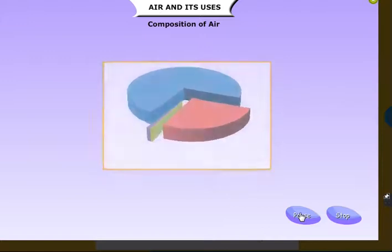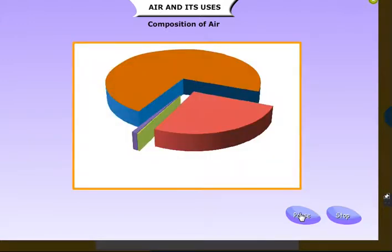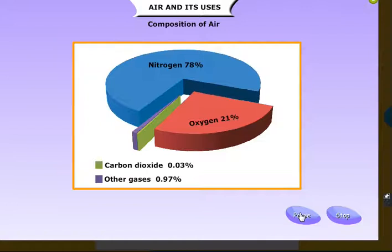Air is composed of various gases. Nitrogen and oxygen are the major gases which comprise most of the air. Carbon dioxide and other gases comprise a small amount. Water vapor is also present in air. All these gases have various uses.